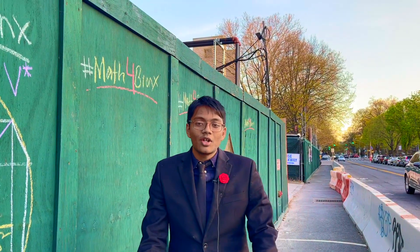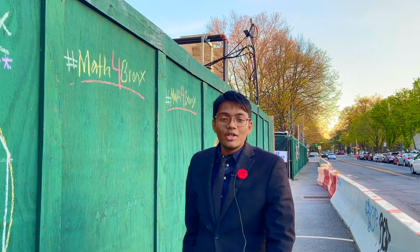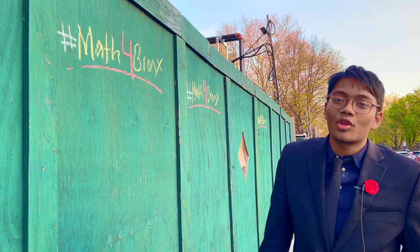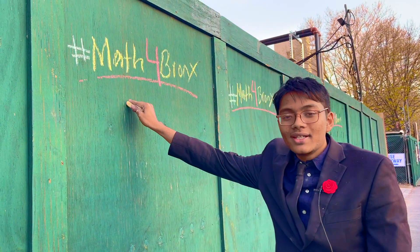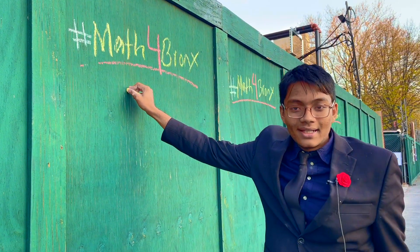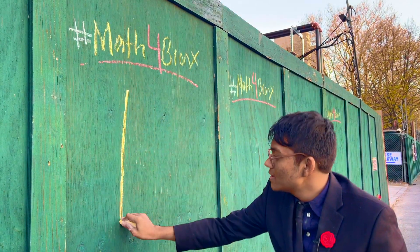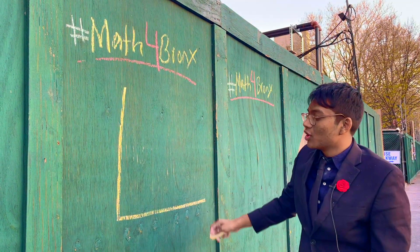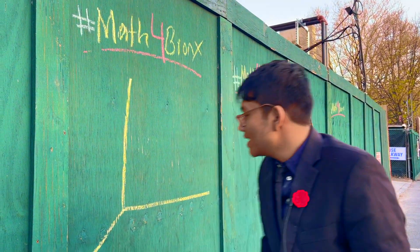Welcome back to the next episode of Maths for Bronze. Today we're going to be doing something called spherical coordinates. Spherical coordinates is all about making something hard into something simple, and that happens whenever you have spherical surfaces.